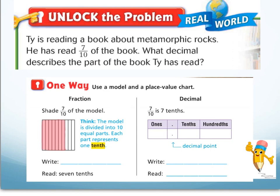In this model, I've shaded seven of the ten slices. I can write seven tenths as a decimal, or as a fraction showing seven over ten, and I read that fraction as seven tenths. As a decimal, I use the place value chart to show seven tenths has no ones and seven tenths. I don't need to use the hundredths place since I only have seven tenths. I write my answer as zero point seven and read it as seven tenths.